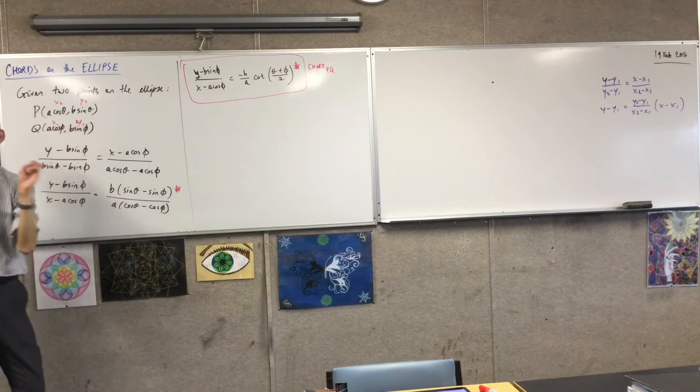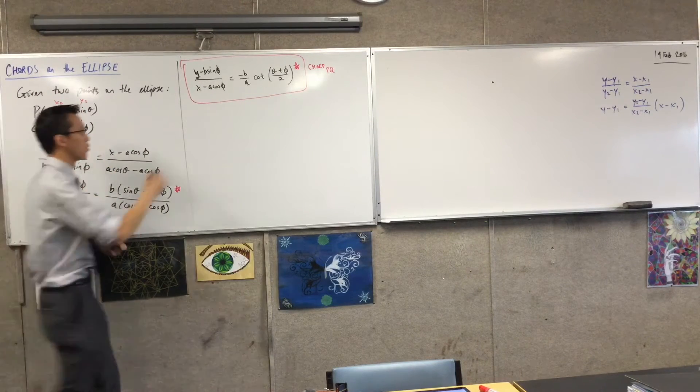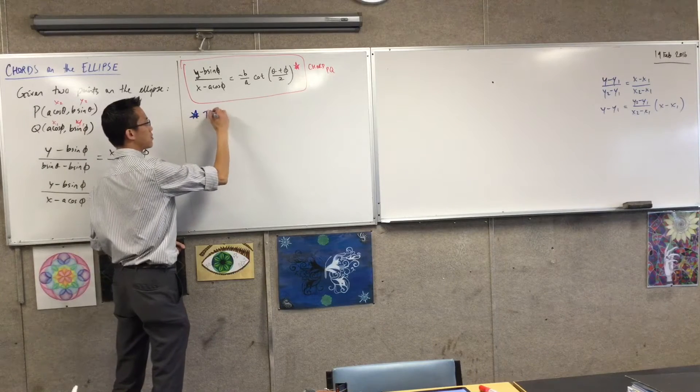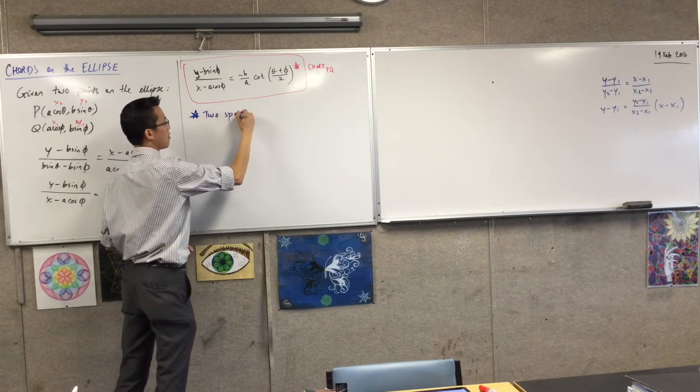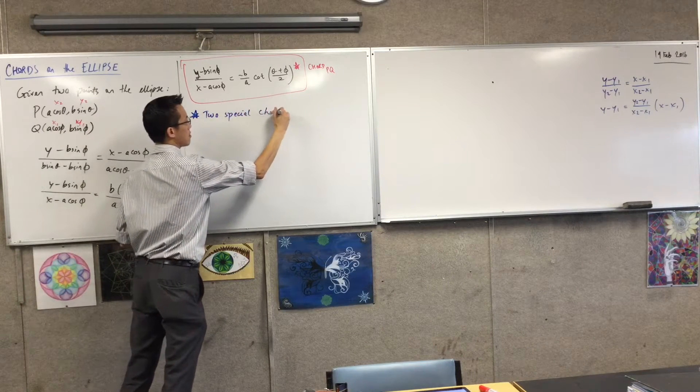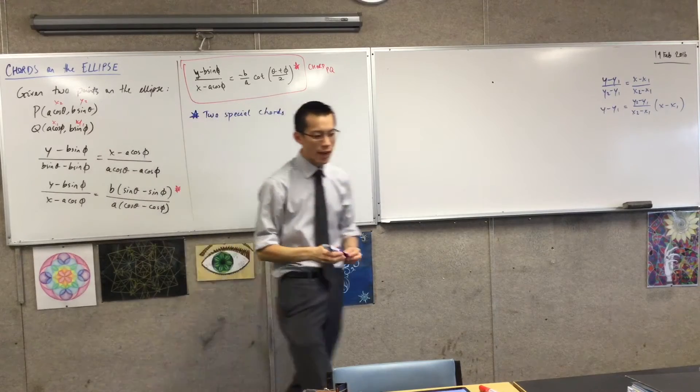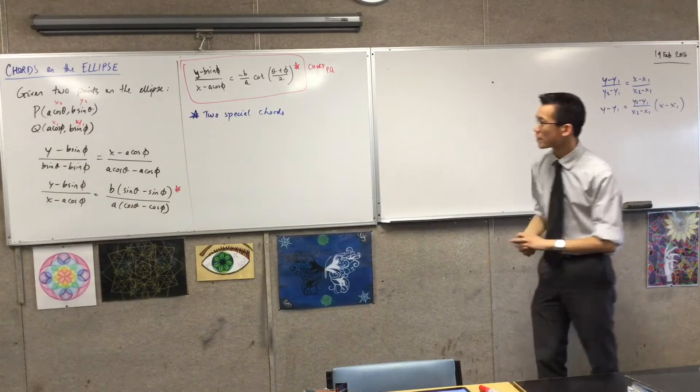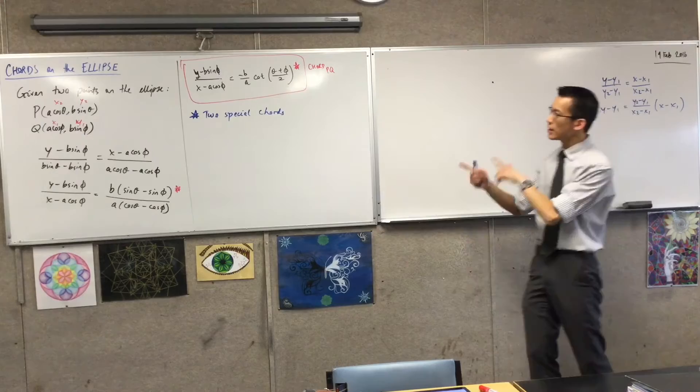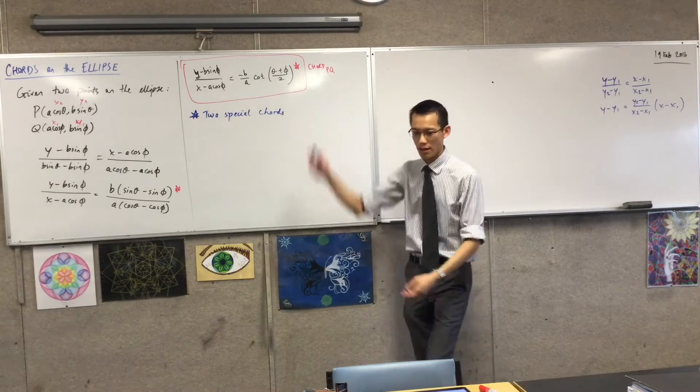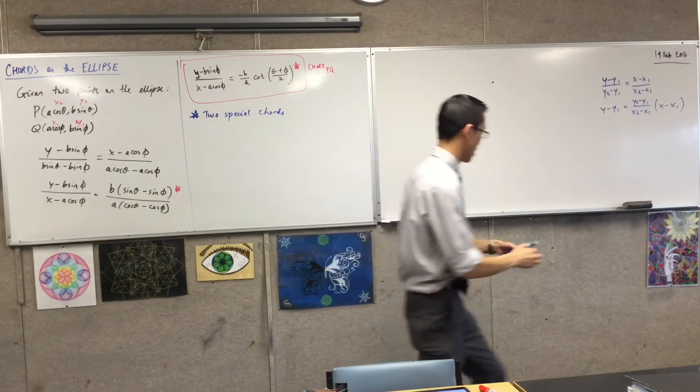Now that we know about a general chord, I want to think about two particular chords, two special chords, which you've actually met before on the parabola. In an ellipse, this is any chord we like. So for example, let's just draw a quick sketch.